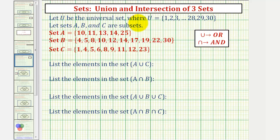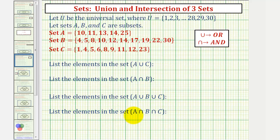In this example, we're given the universal set contains the whole numbers from one through thirty. A, B, and C are subsets containing the elements given here. We want to list the elements in set A union C, which means we want to find the elements in A or C. Then find the elements in set A intersect B, which would be the elements in A and B. Then find the elements in set A union B union C, meaning find the elements in A or B or C. And finally, we want to find the elements in set A intersect B intersect C, which would be the elements in set A and set B and set C.